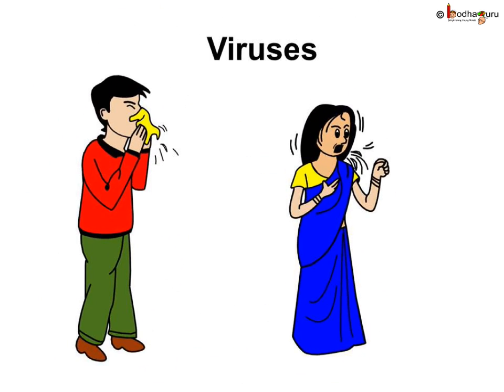Have you ever fallen ill with symptoms of cough, sore throat, running nose, nasal congestion, and sneezing? This is common cold, caused by a virus. Even chicken pox is caused by a virus. These are the second kind of microbes — viruses.